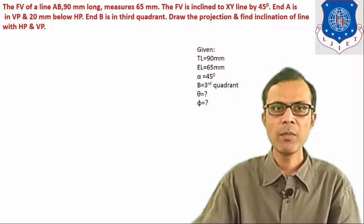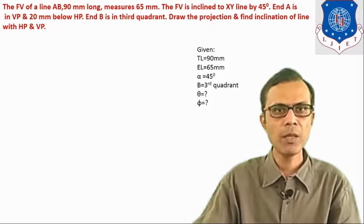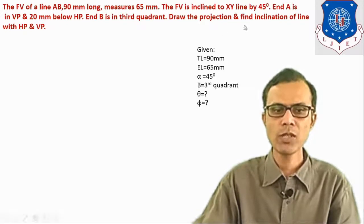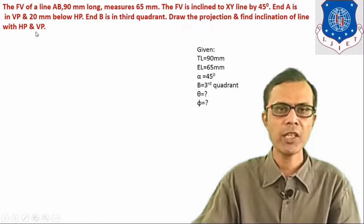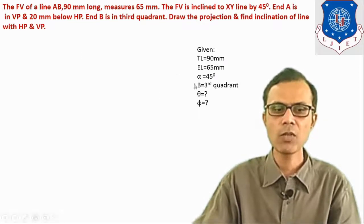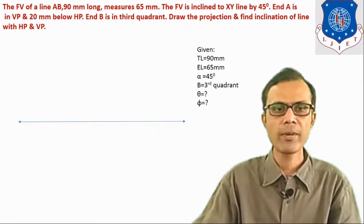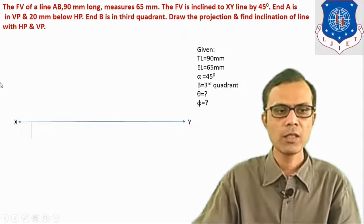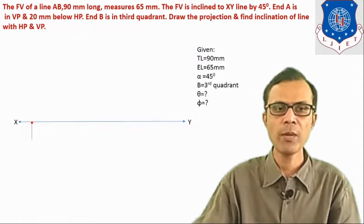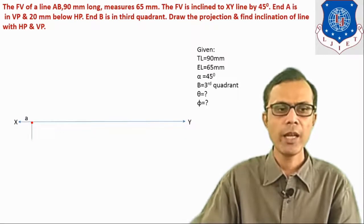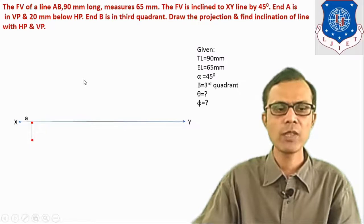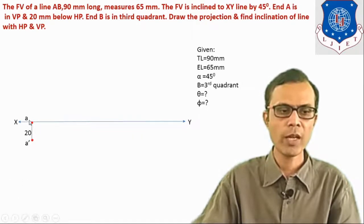Since B is in the third quadrant, B' will be below the XY line and point B will be above the XY line. We have to draw the projection and find the inclination angles theta and phi. Now let us start to draw the projection. Draw reference line XY and draw a projector. A is in VP and 20 mm below HP, so A point will be on the XY line, and 20 mm below XY line we take point A'. We have now located A and A'.